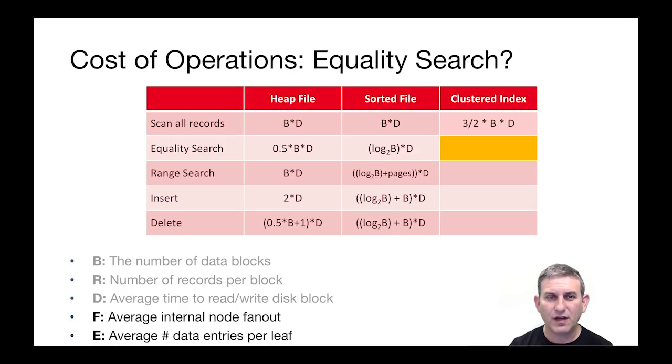To account for the cost of a quality search, we're going to introduce two new variables. F, the internal node fanout, and E, the number of data entries per leaf, which you can think of as the leaf level fanout.